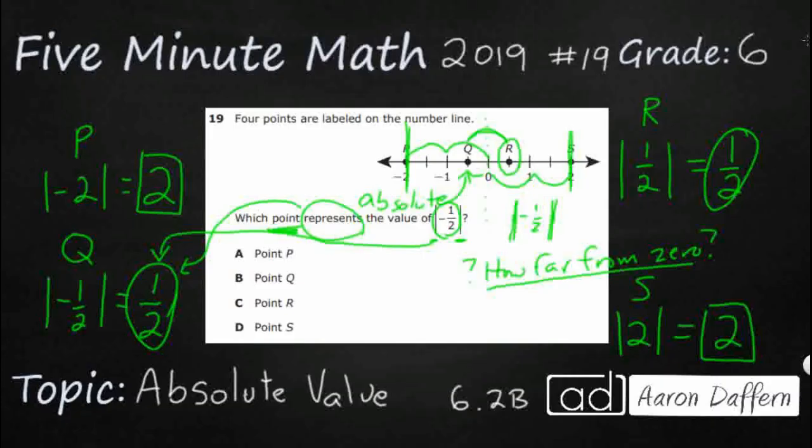Even though we're staring at negative one-half, which is point Q, we need to find the absolute value of that negative one-half, which is actually positive one-half. That point is actually point R.